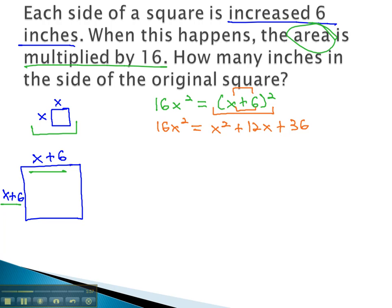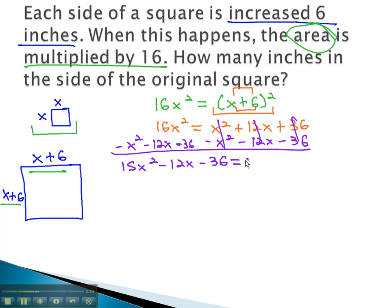In order to make this easier to solve, let's move everything to the same side of the equation. We'll subtract x squared, subtract 12x, and subtract 36, which will keep the x squared positive. When we do this on both sides, we end up with 15x squared minus 12x minus 36 equals 0.